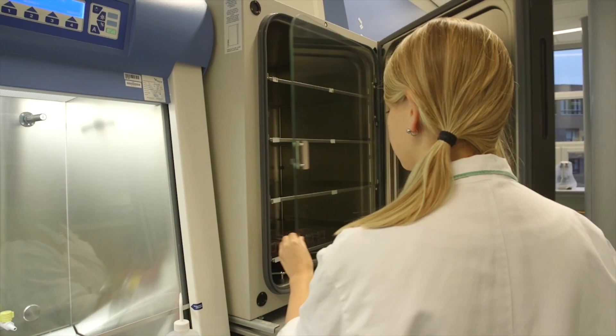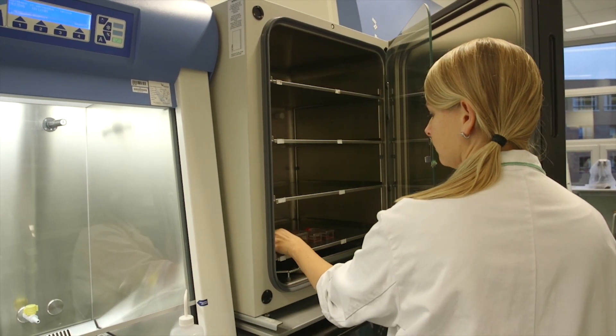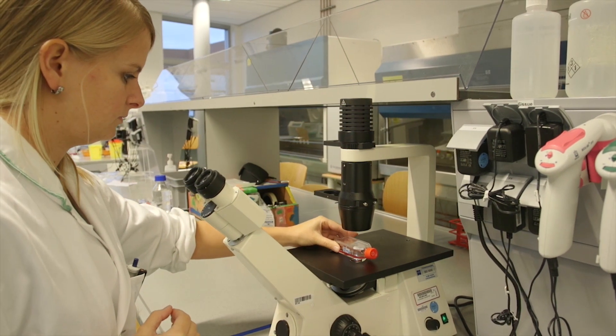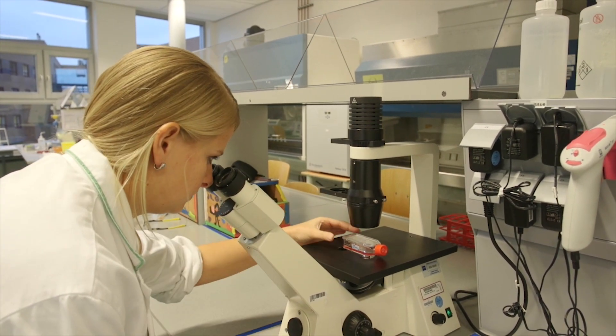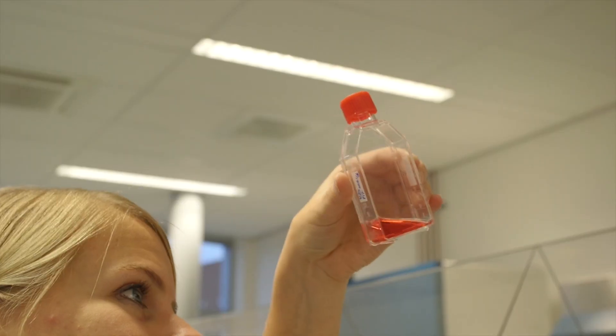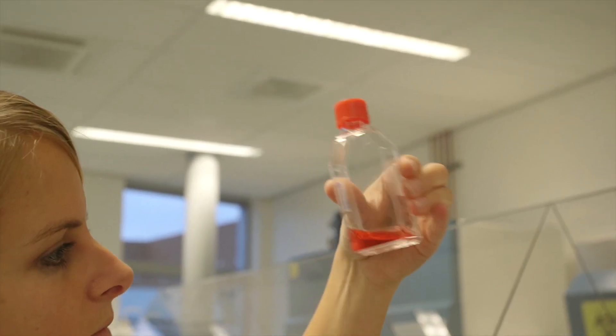Before you start, look at the cells in the culture flask using the inverted microscope. Take note of the confluency, if there are many dead cells floating around, and the morphology of the cells. Also, check the colour and cloudiness of the medium.